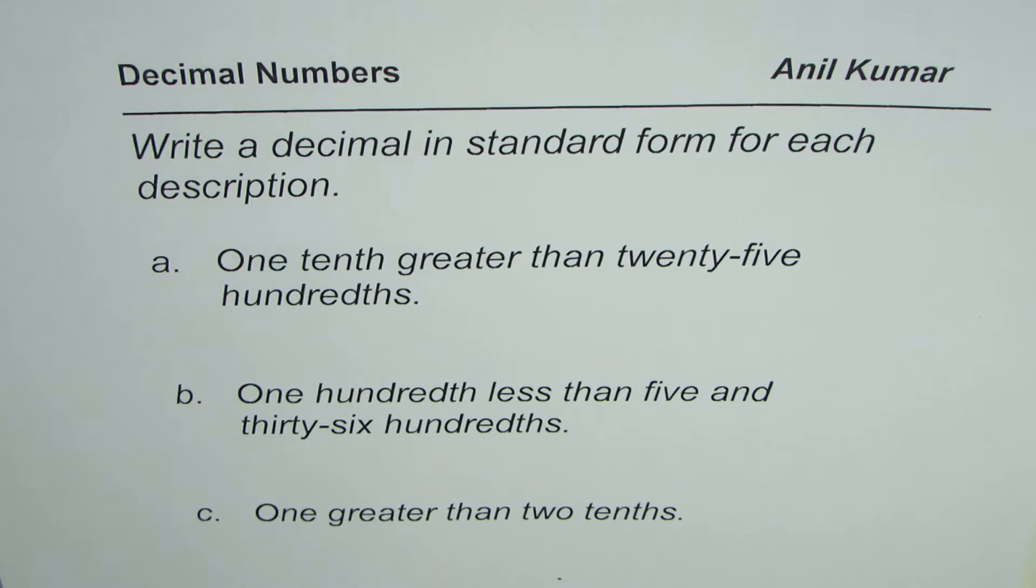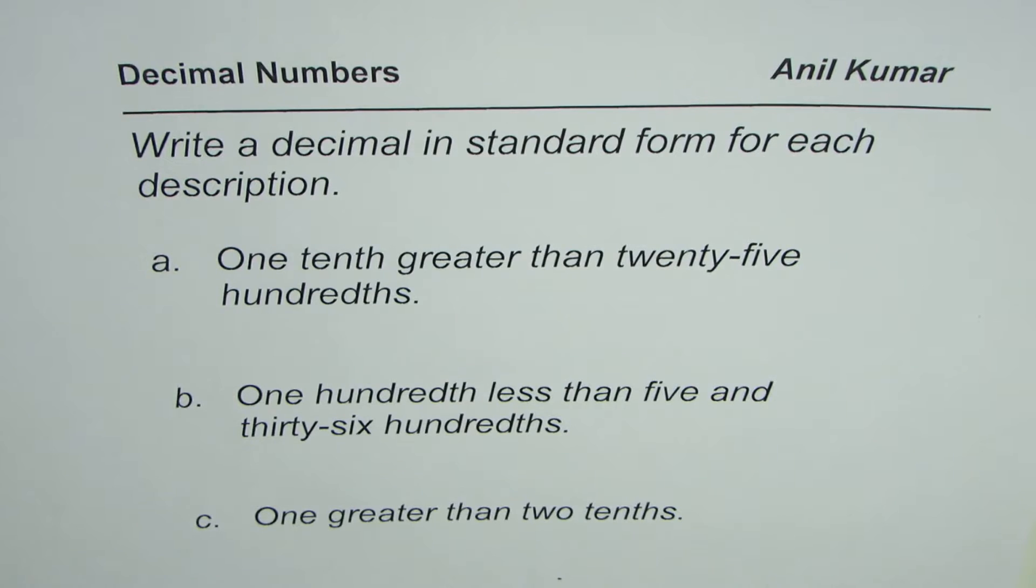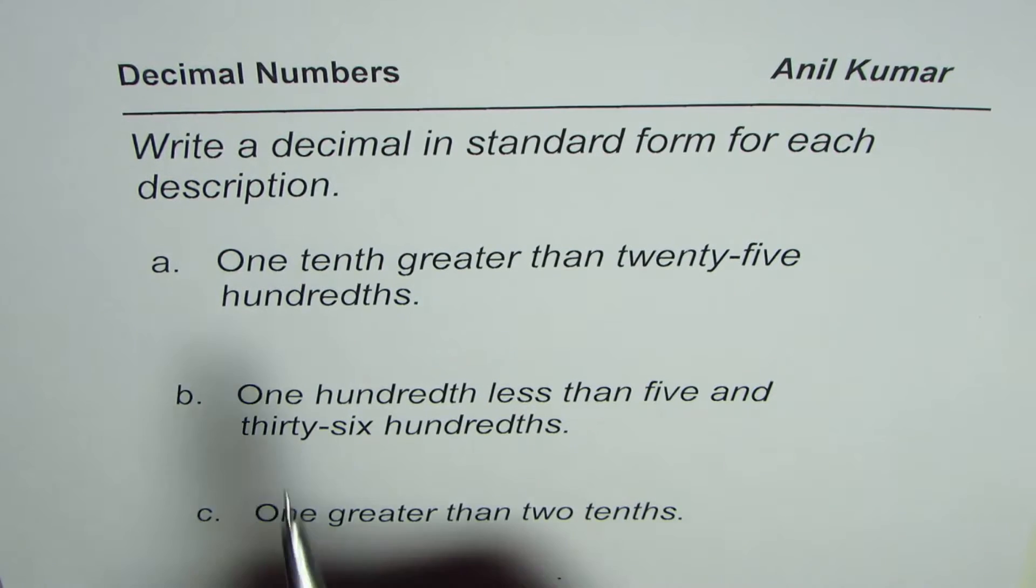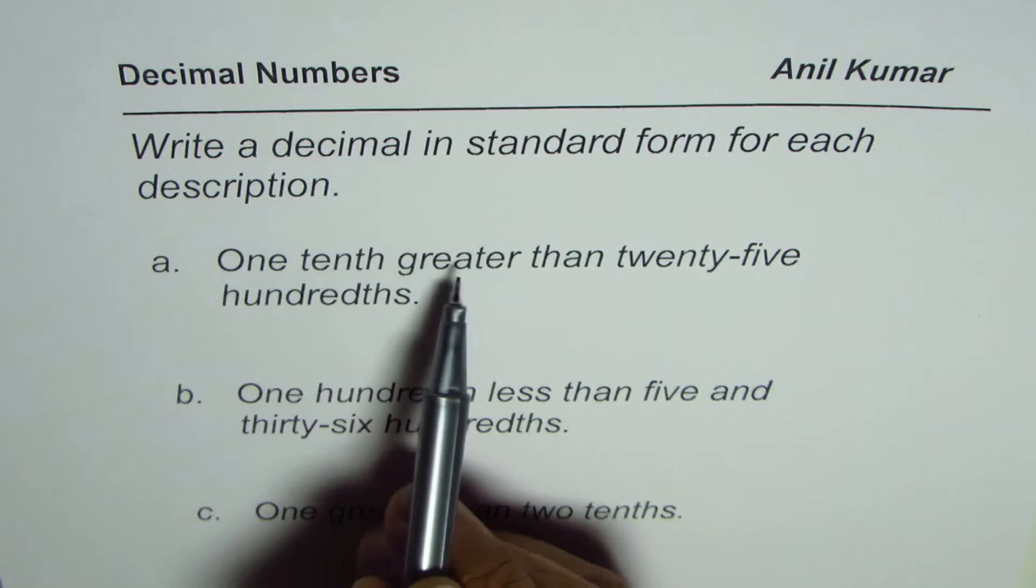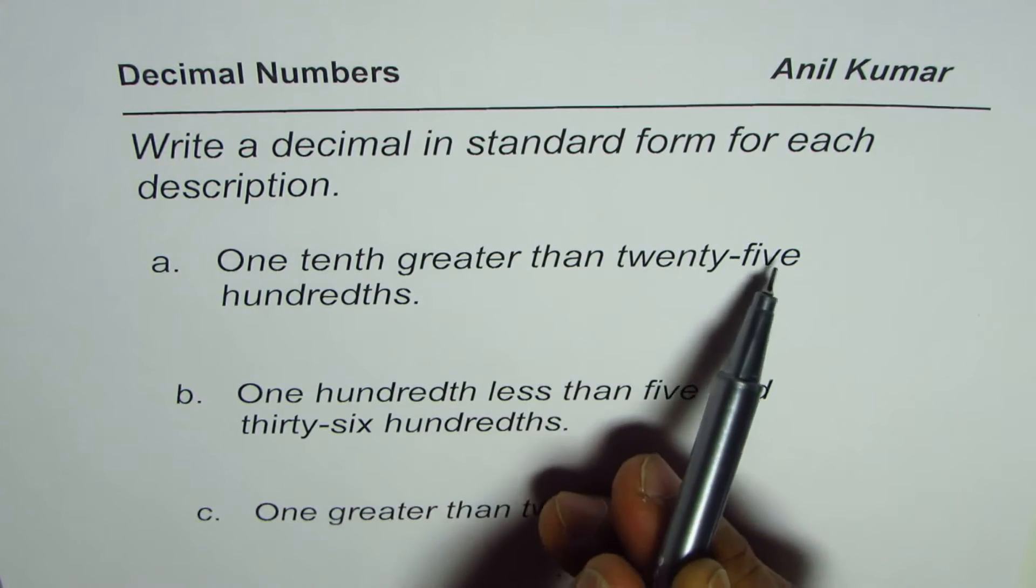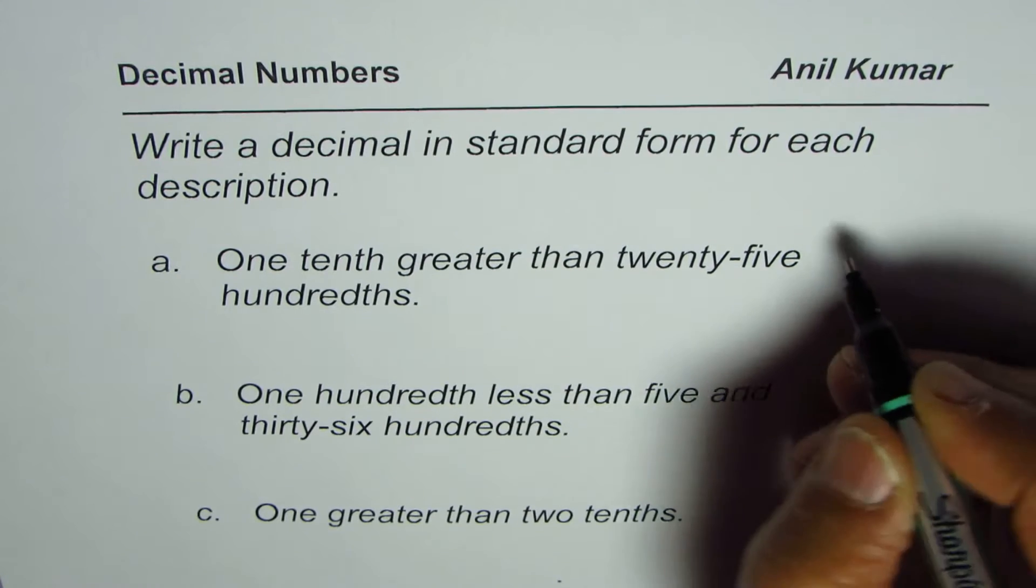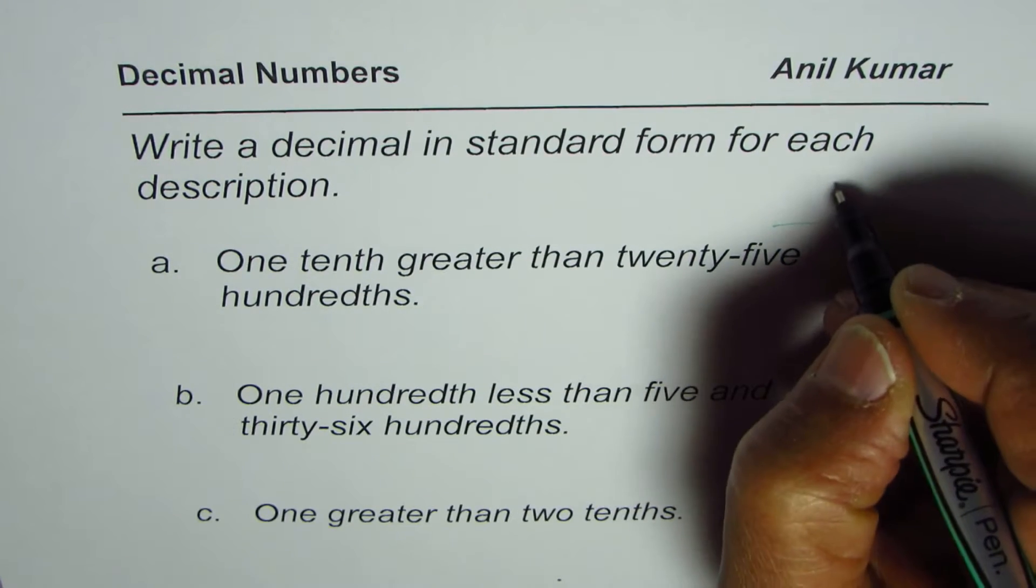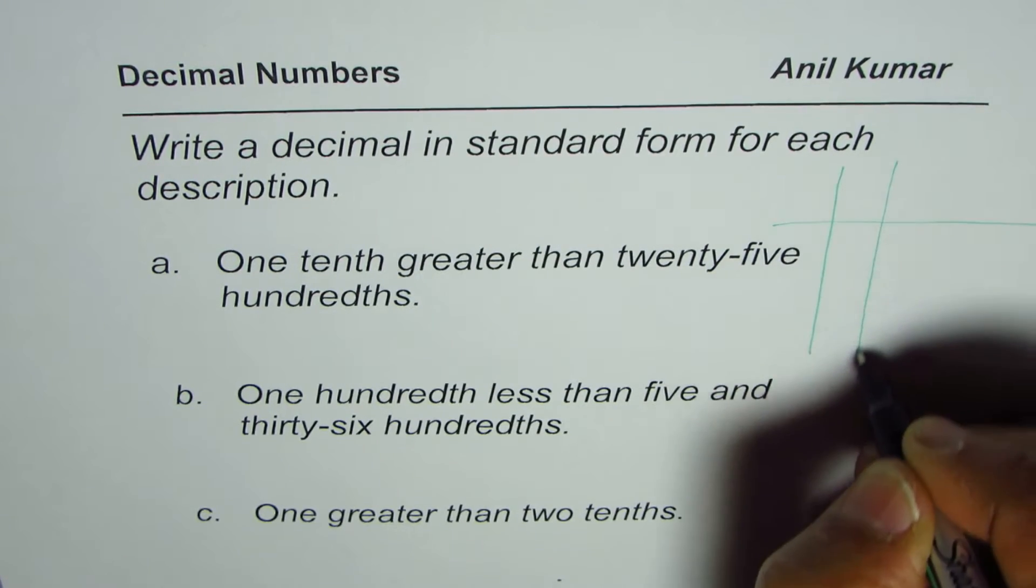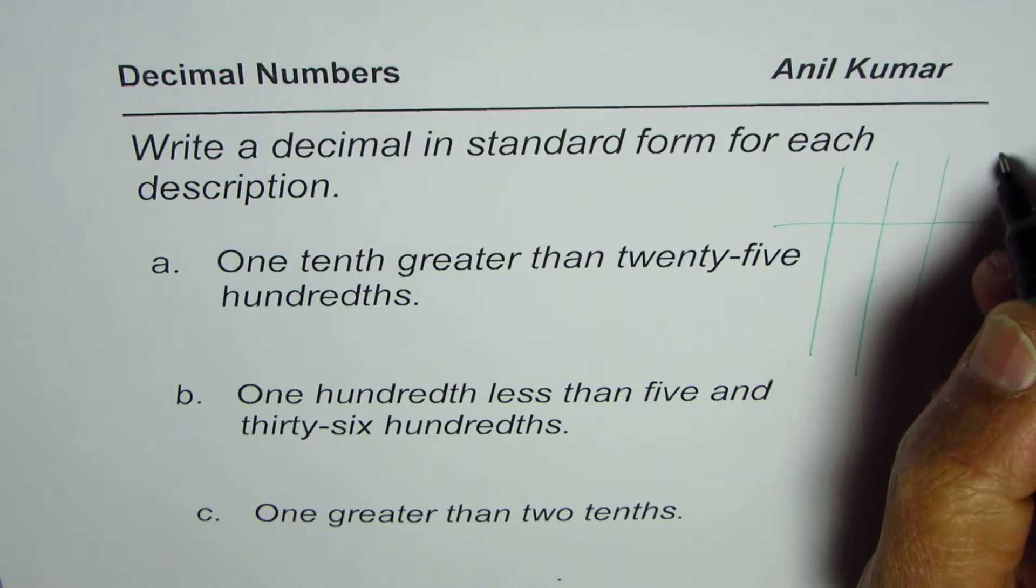Let us see what we understand by these decimal numbers. Part A is one-tenth greater than twenty-five hundredths. So how do you write twenty-five hundredths? Let me get back to the place value chart with decimal numbers. I am making a smaller one here.